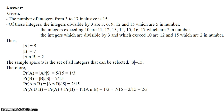First, before solving, identify all the given information from the question. The number of integers from 3 to 17 inclusive is 15. So there are totally 15 numbers from 3 to 17 — that is 3, 4, 5, 6, 7, and so on up to 17. If you count all these numbers, that count is 15.